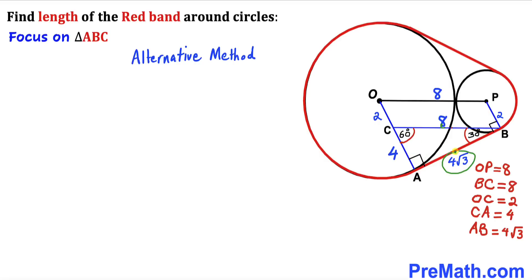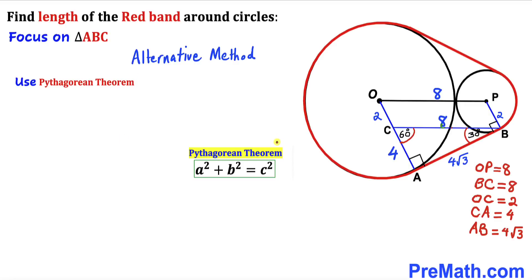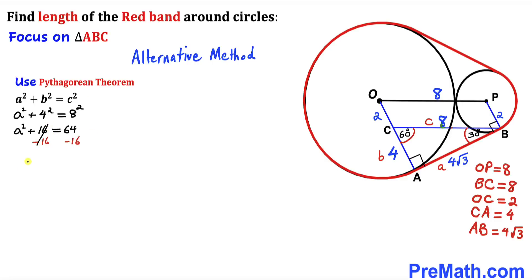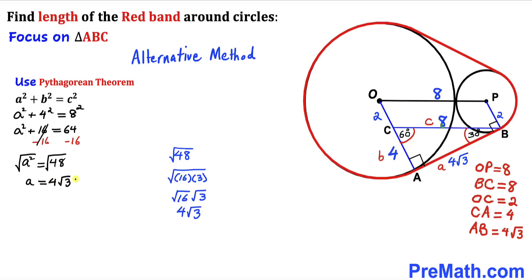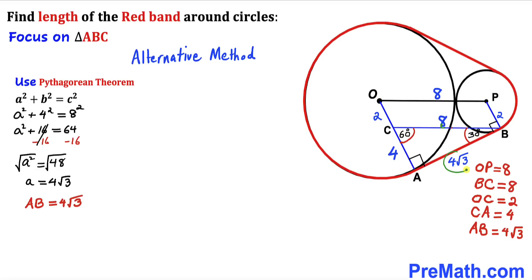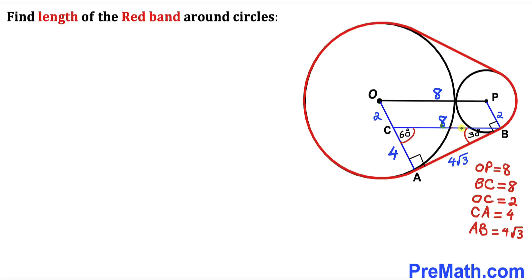If you are unsure how we got 4 times square root of 3, we can use the Pythagorean theorem: A² + B² = C². Calling the longest leg C, with B equal to 4 and C equal to 8: A² + 16 = 64, so A² equals 48. Taking the square root of both sides, A equals the square root of 48, which simplifies to 4 times the square root of 3. So length AB is 4√3, confirming angle ABC is 30 degrees and angle ACB is 60 degrees.